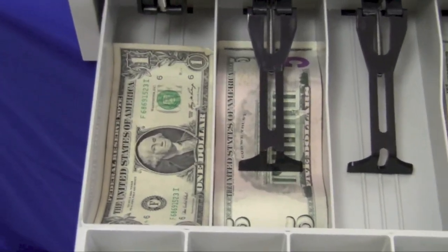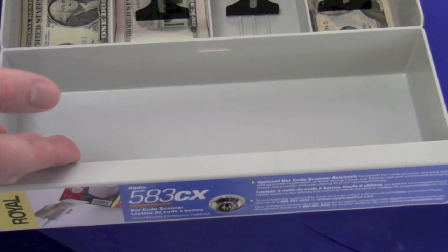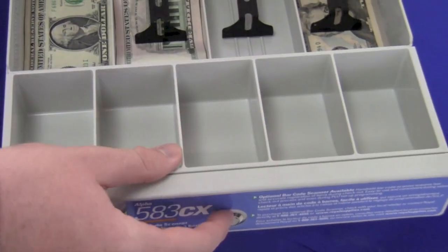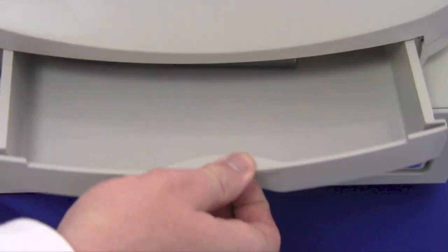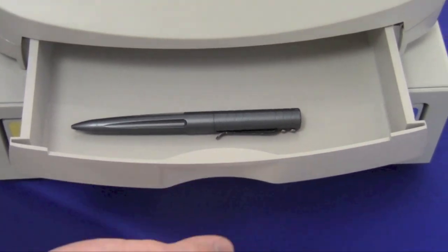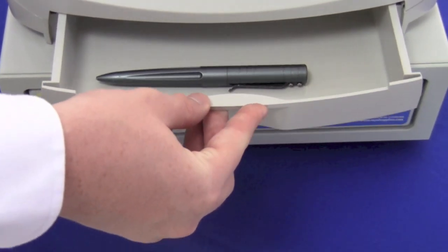Inside the bottom drawer are four slots for bills and a removable coin tray. Above the money drawer is another drawer for accessories such as pens. Note that the top drawer is not for valuable items since it does not lock.